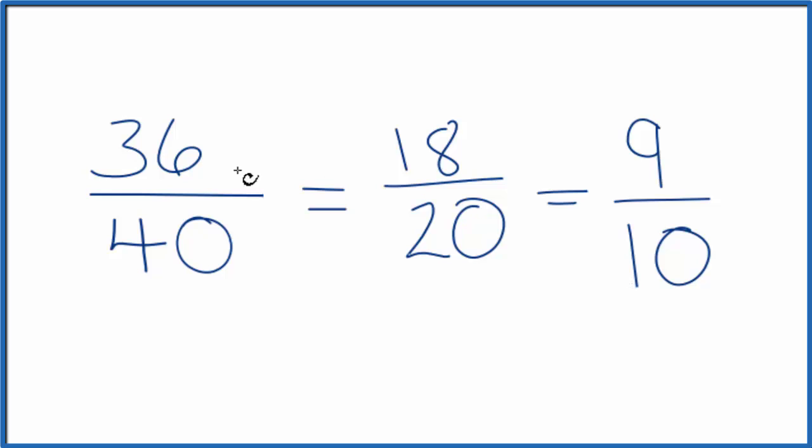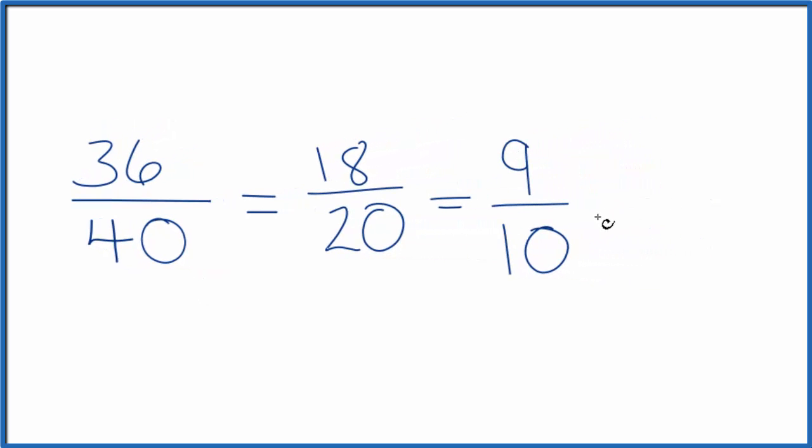It really doesn't matter when we're converting the fraction to a decimal, but it's good to know. So let's do this. Why don't we take 36 and divide that by 40 in the calculator? We end up with 0.9 and you get the same answer, 9 divided by 10, that's 0.9, 18 divided by 20, 0.9.